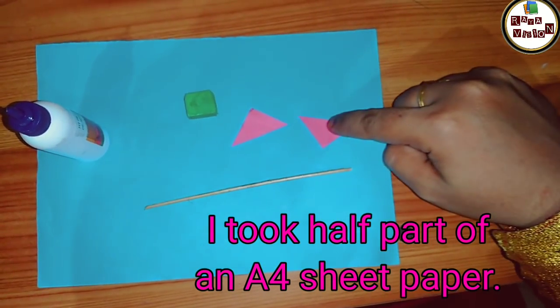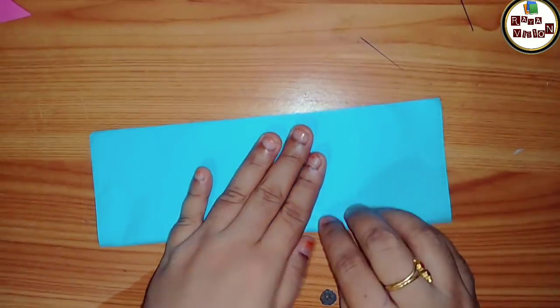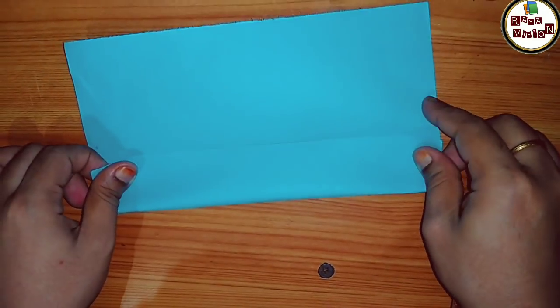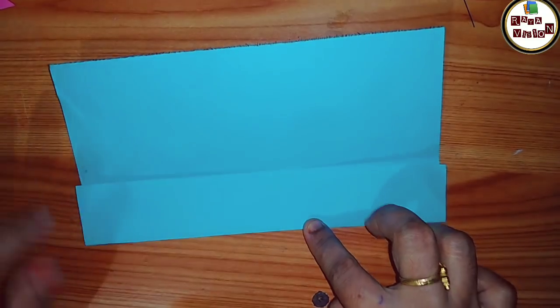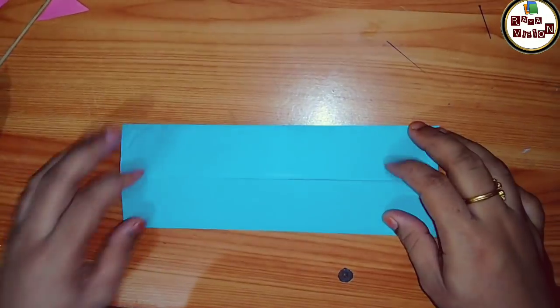First, fold your paper just like this into two parts, and after that fold one part again into two like that. You will get four parts. Hope you all got like this.